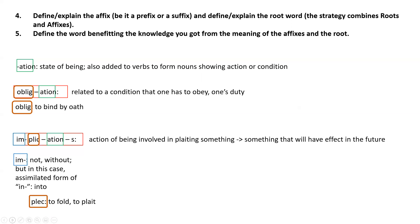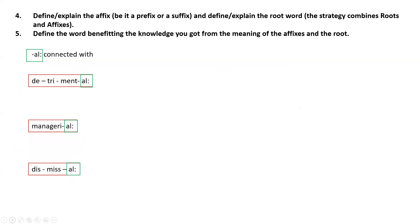Then we have the second group of words that we grouped by the same suffix -al, connected with something. And with detrimental we have this prefix de-, which means away. Then we have tri-, the root which derives from terere, which meant to rub, to wear. So something that causes harm due to being used too much.